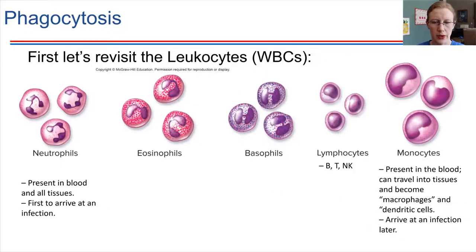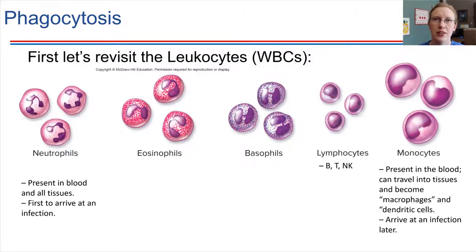Before we talk about phagocytosis, let's get a reminder going for white blood cells. What you're seeing on the screen here — these are all white blood cells that you were introduced to back when we were talking about blood. However, we didn't go into detail on any of these. We just kind of said that these are present in the blood. So let's take a look now in a bit more detail.